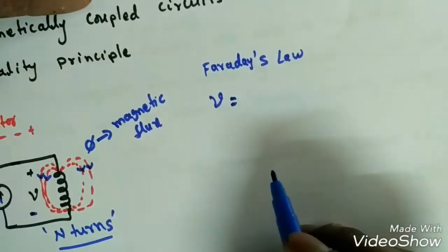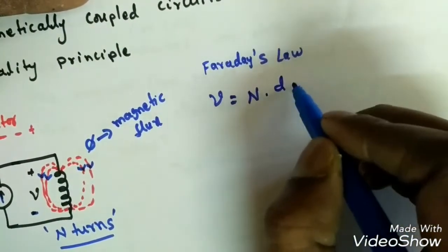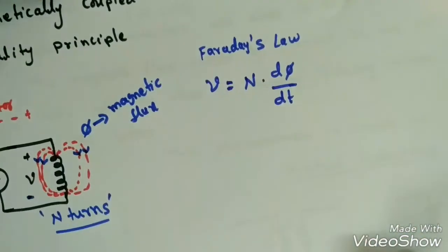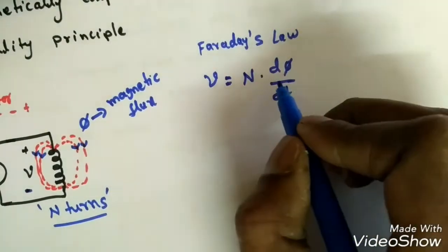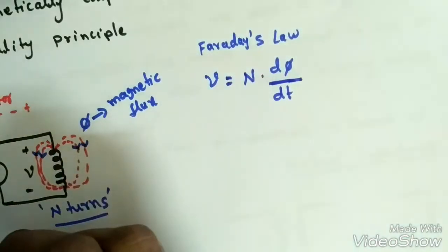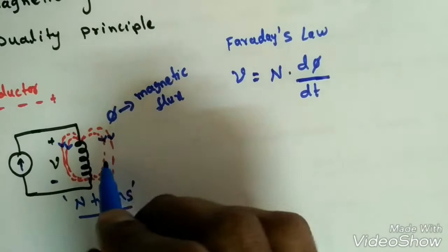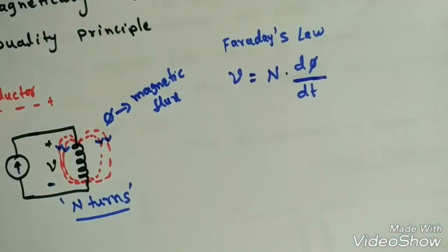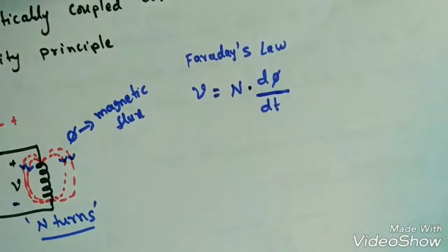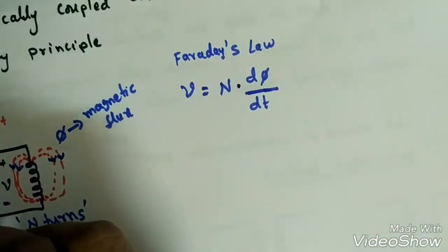According to Faraday's law, the induced voltage is equal to the number of turns into the time rate of change of magnetic flux: v = N · dΦ/dt. The reason it is time-varying magnetic flux is that when we apply time-varying currents, magnetic flux is generated depending on the number of turns.